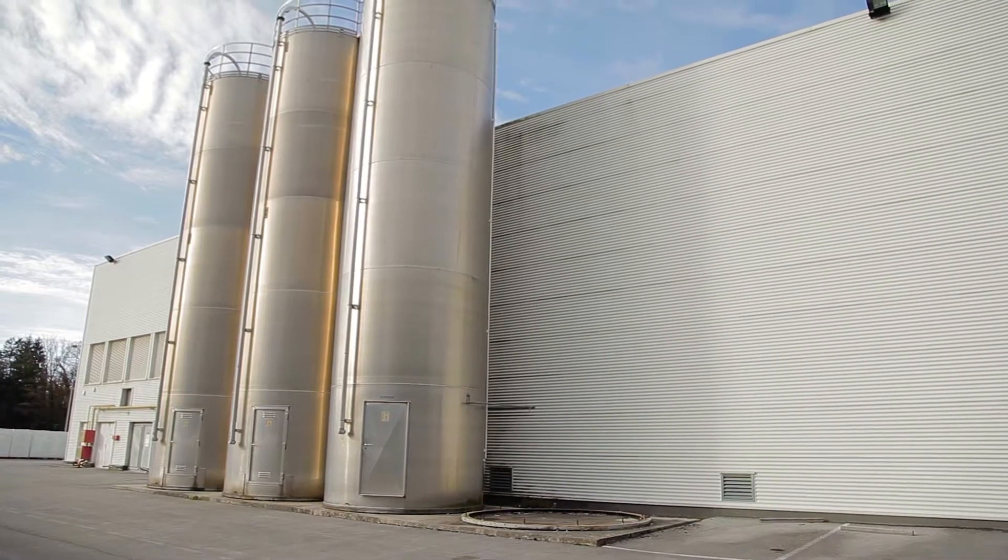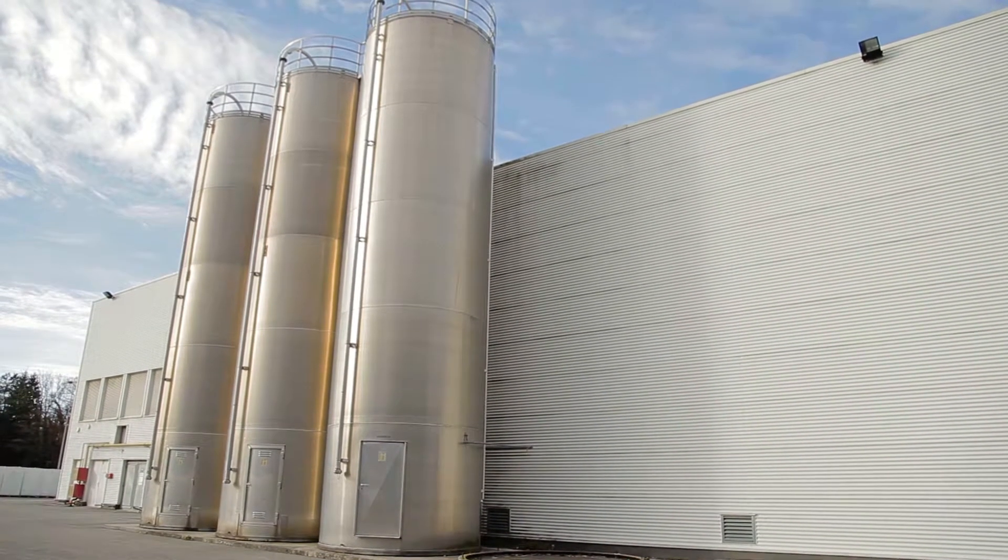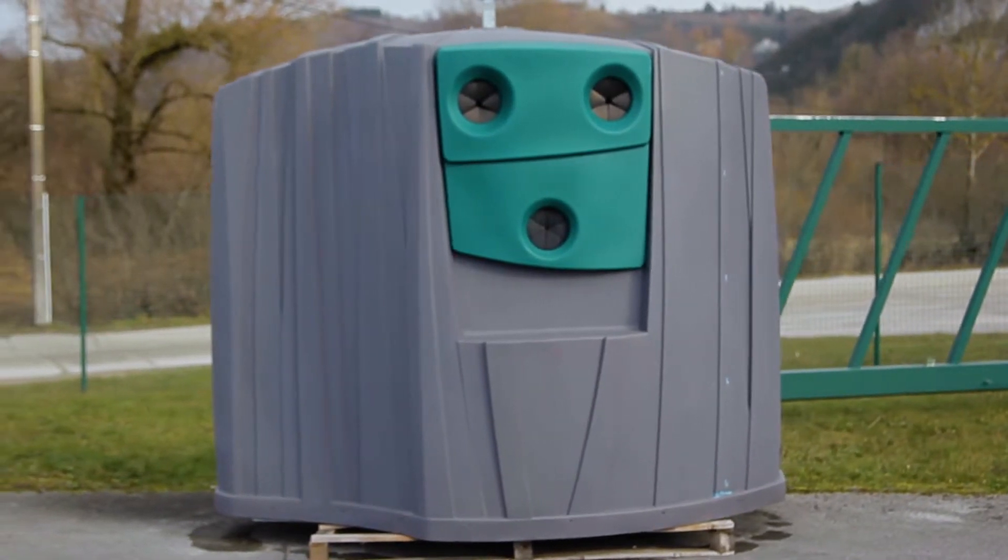Rotomoulding is a process for transforming plastic materials. It is used to create hollow parts, both large and small, simple and complex.